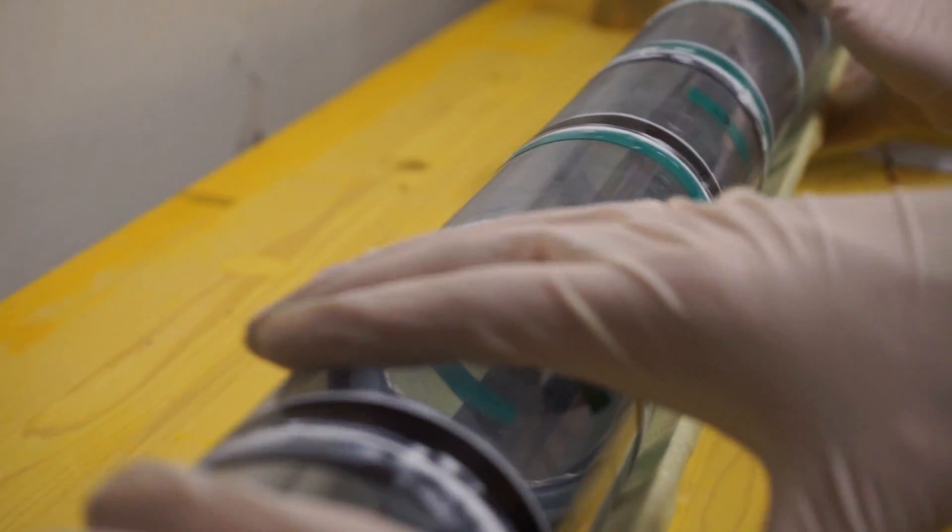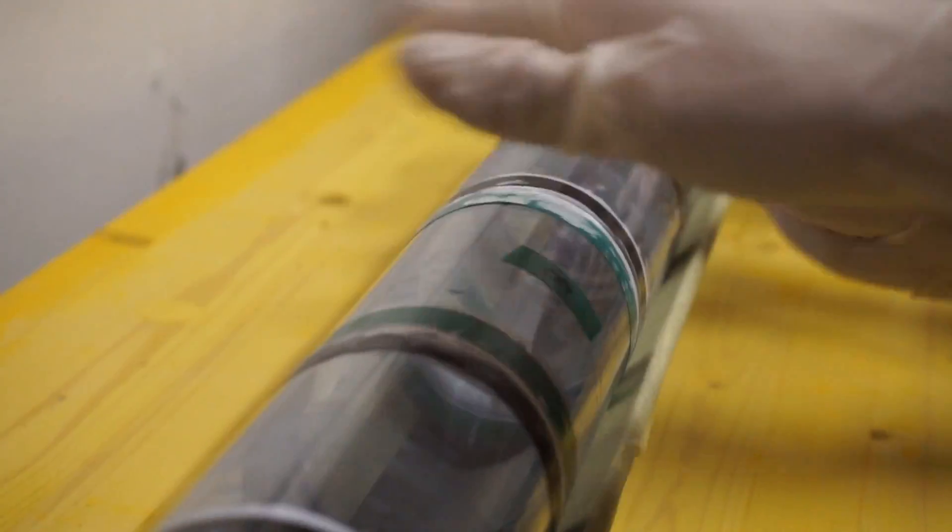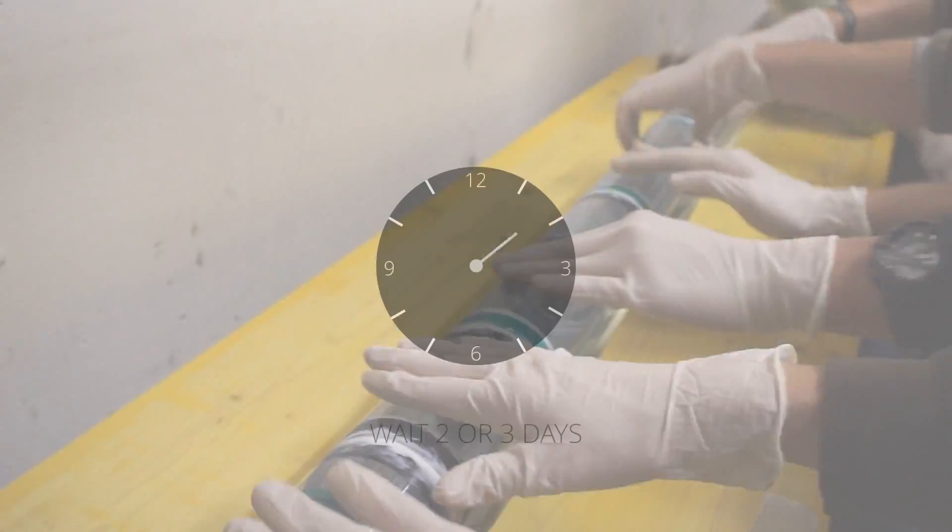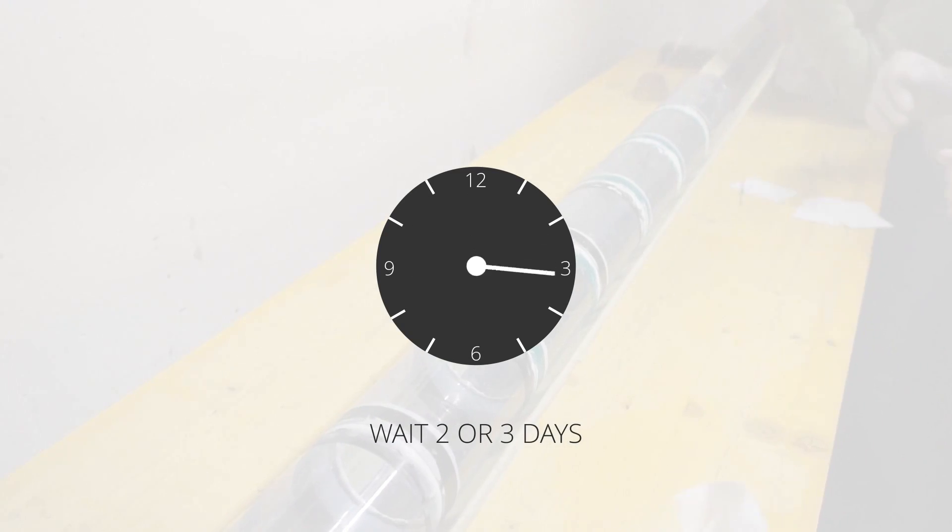You can reuse some of the excess glue for the next section. If you have joined all bottle sections together, rotate the pressure vessel to make sure it is not crooked. After that wait at least two or three days before you continue.